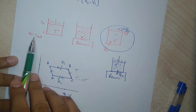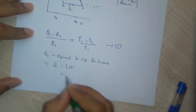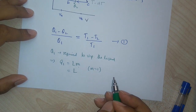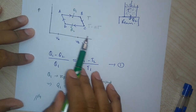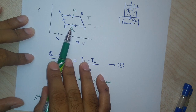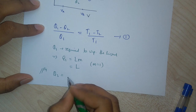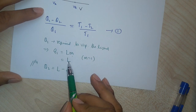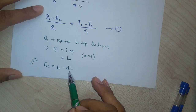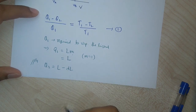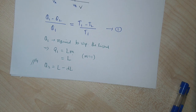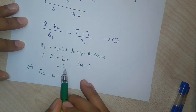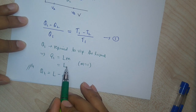Since the mass of the liquid is 1 unit, M equals 1, that means Q1 equals L. Similarly, in process CD, Q2 amount of heat was rejected. So Q2 equals L minus DL — the heat that is rejected is the initial latent heat taken in minus some amount DL. So L minus DL is the amount of heat that is liberated.